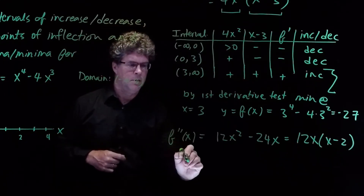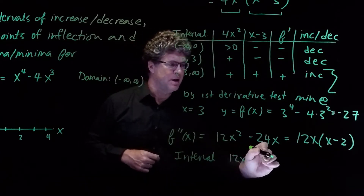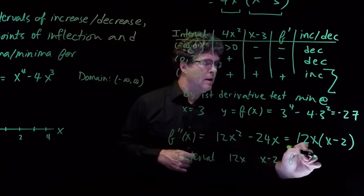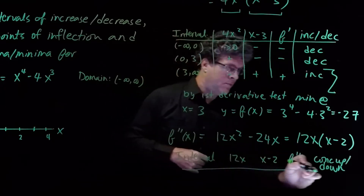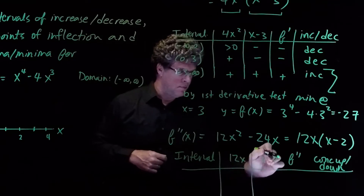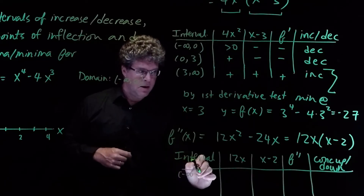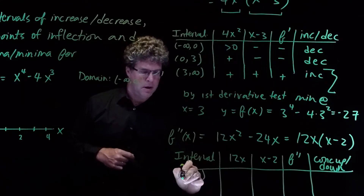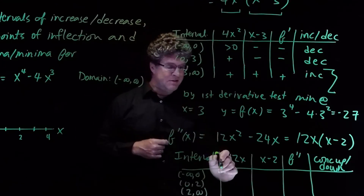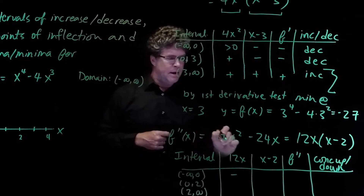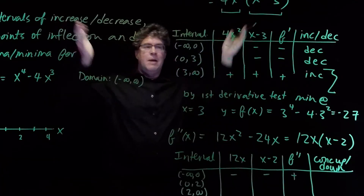We'll do the same kind of sign table as before. The intervals are: minus infinity to 0, then 0 to 2, then 2 to infinity. The two quantities are 12x and x minus 2, and we look at f double prime to determine concave up or down. On the interval minus infinity to 0, 12x is negative and x minus 2 is negative, so f double prime is positive — that's concave up, like a happy face.